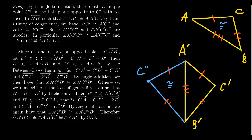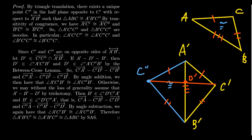Returning to the proof of side-side-side: by construction, C prime and C double prime are on opposite sides of line A'B'. So if we look at the line segment connecting the two together, there's going to be some point of intersection between segment C'C double prime and the line A'B'. We'll call that point of intersection D prime. Notice that the point D prime is necessarily going to be between A prime and B prime — though I should be careful: we don't actually know that yet.